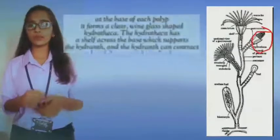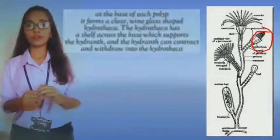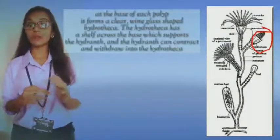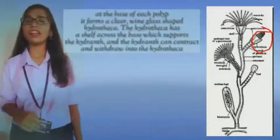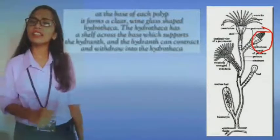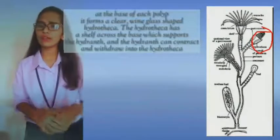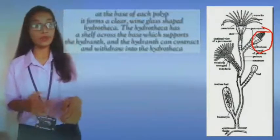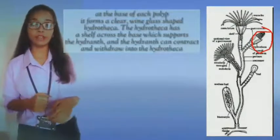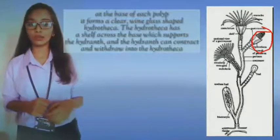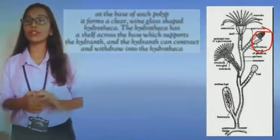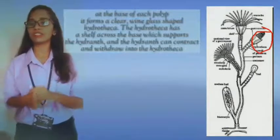At the base of each polyp, it forms a clear, wine-glass shaped hydrotheca. The hydrotheca has a shelf across the base which supports the hydrant. The hydrant can contract and withdraw into the hydrotheca.